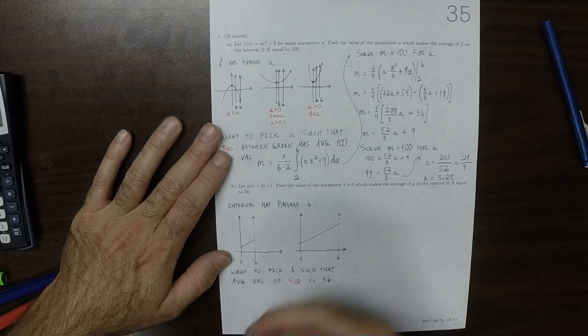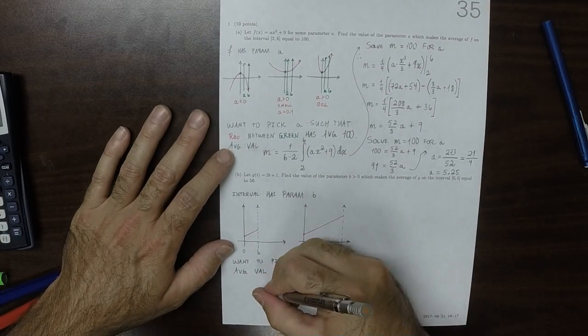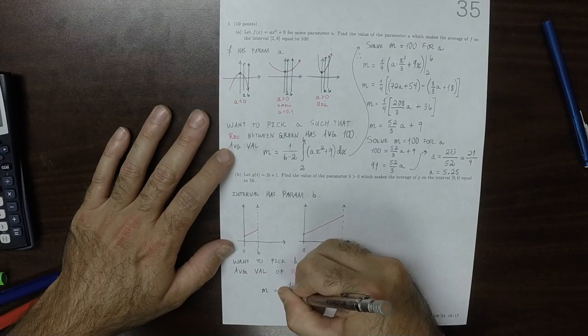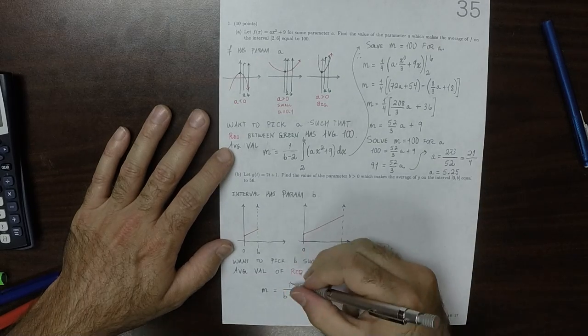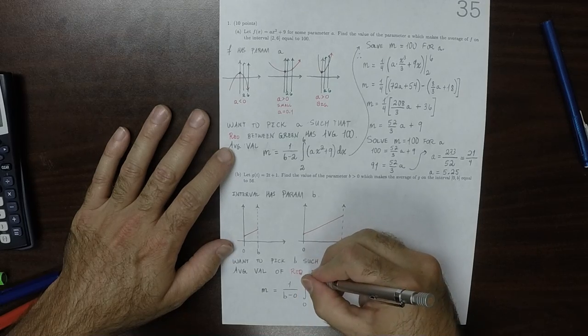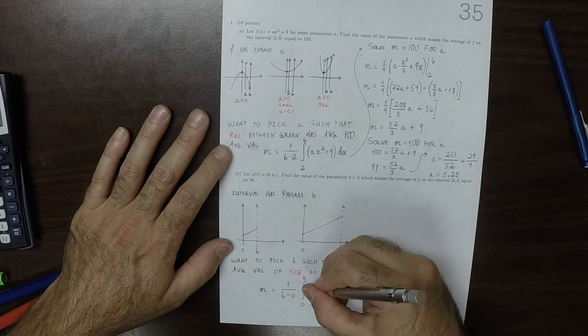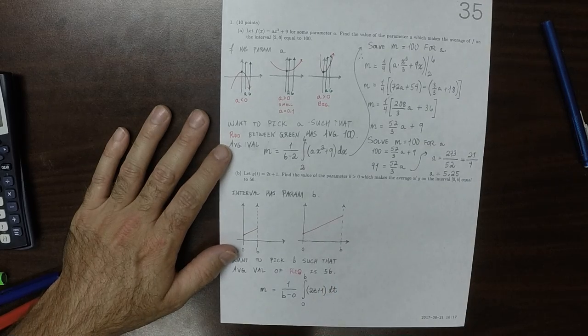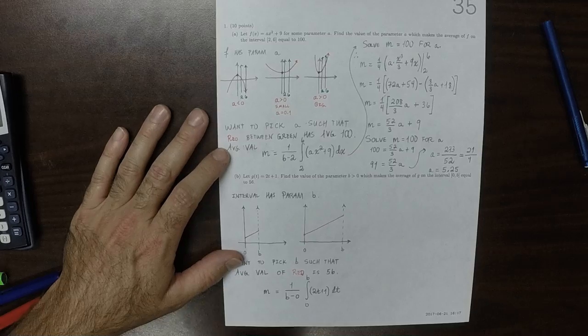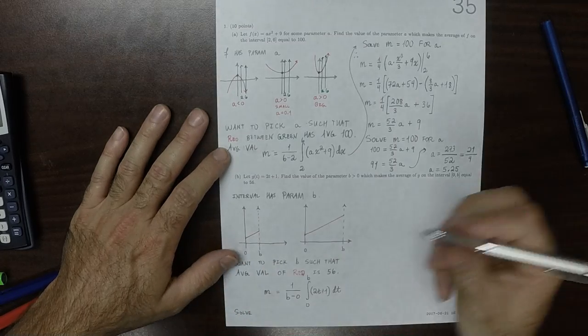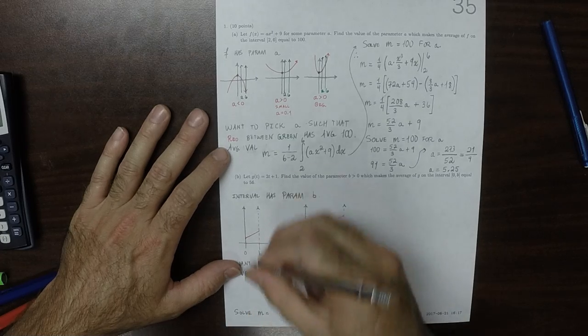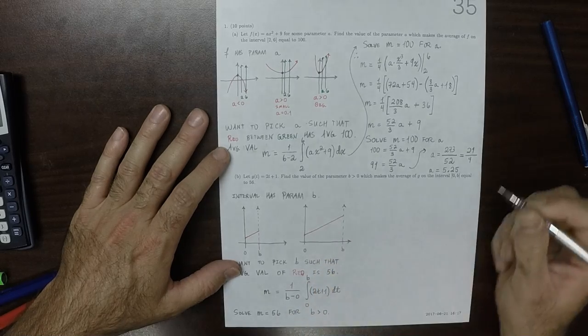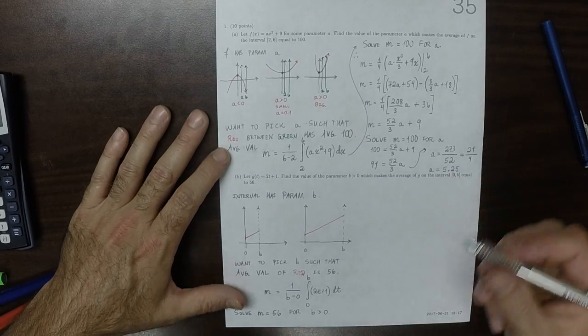Well, the formula for the average value in this scenario, if we call the average value M, then that will be 1 over B minus 0, the length of the interval, and then integral 0 to B of 2t plus 1 dt. And we want to solve this for B, solve M equal to 56 for positive B's because the instruction says positive B's.